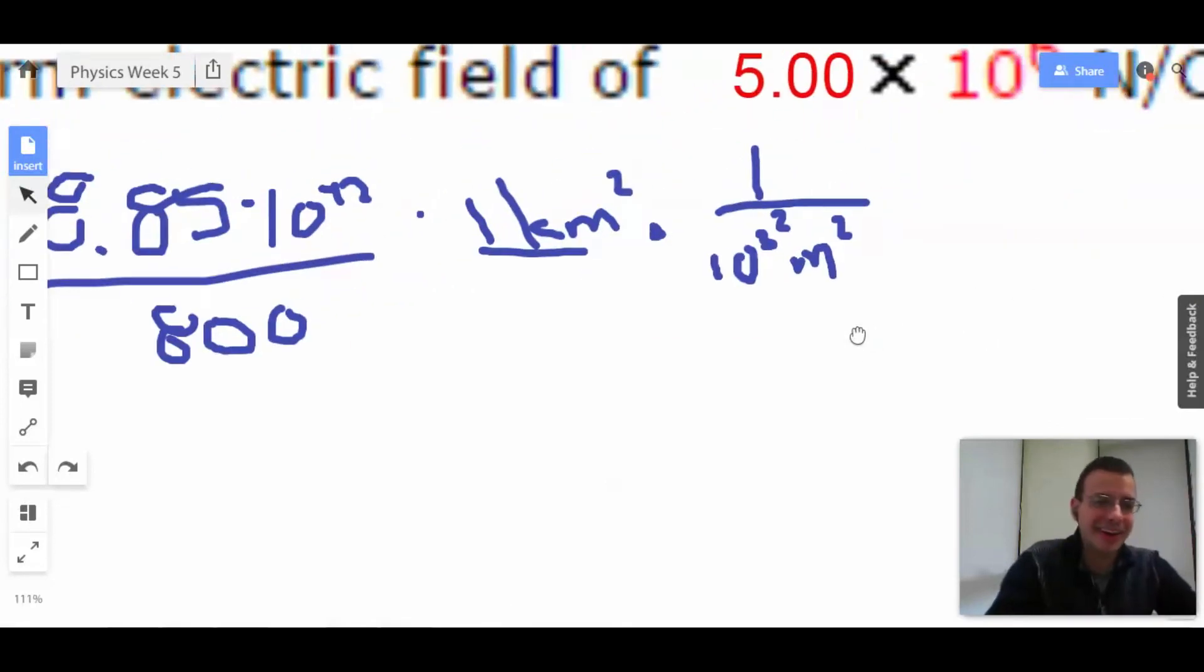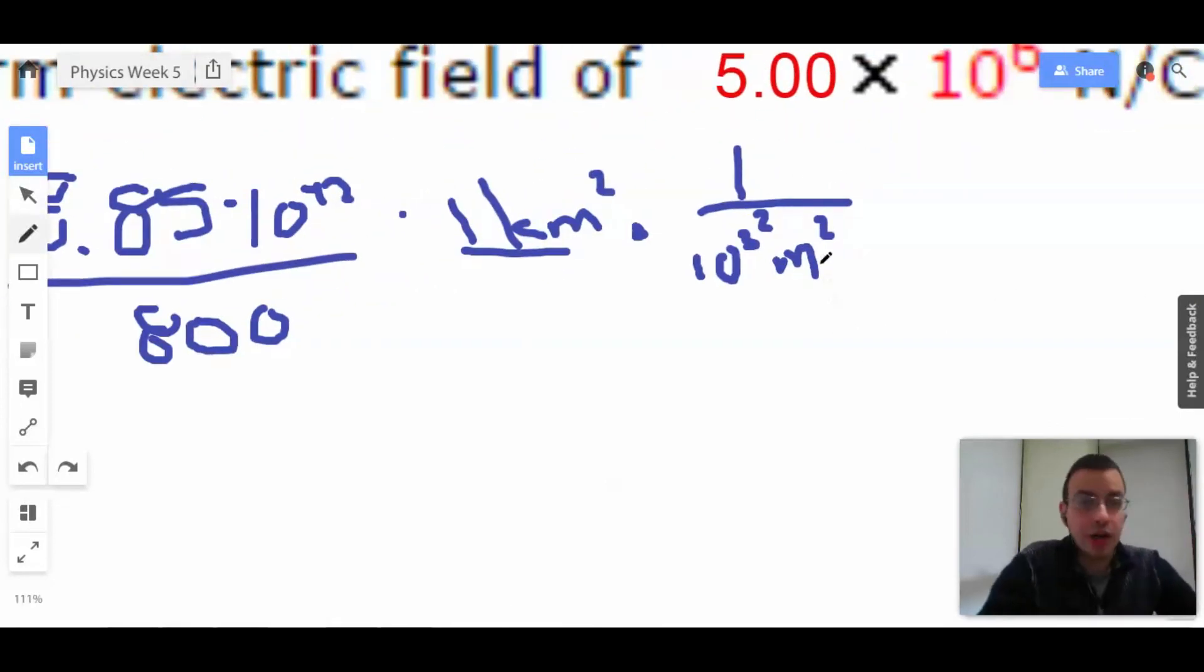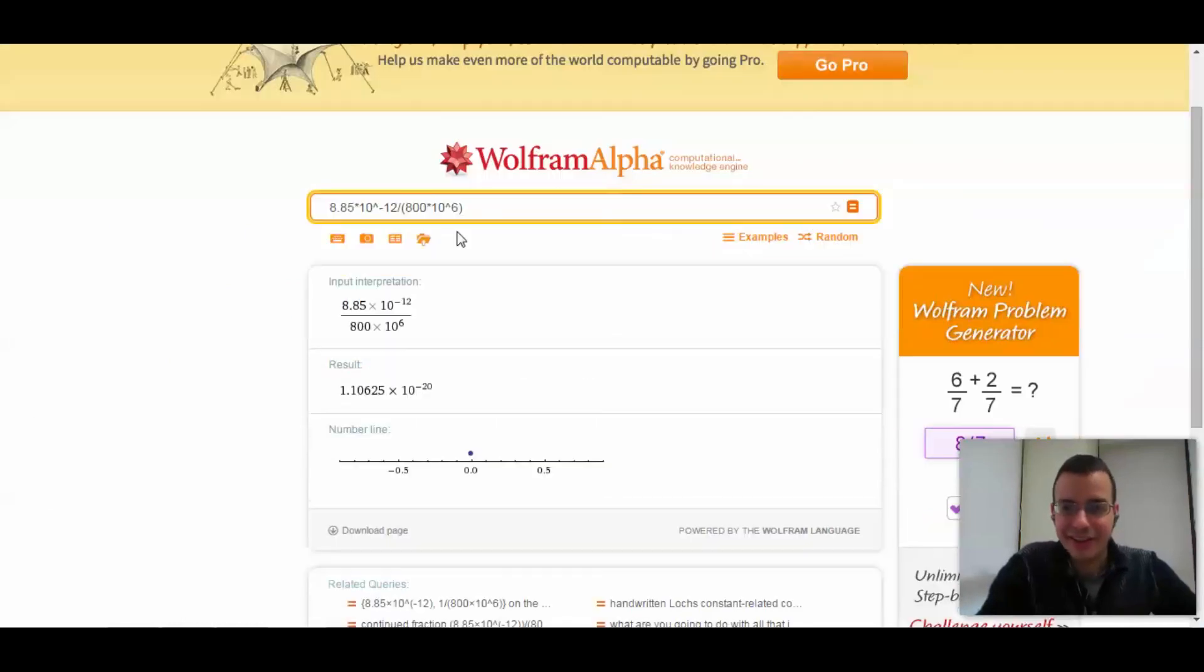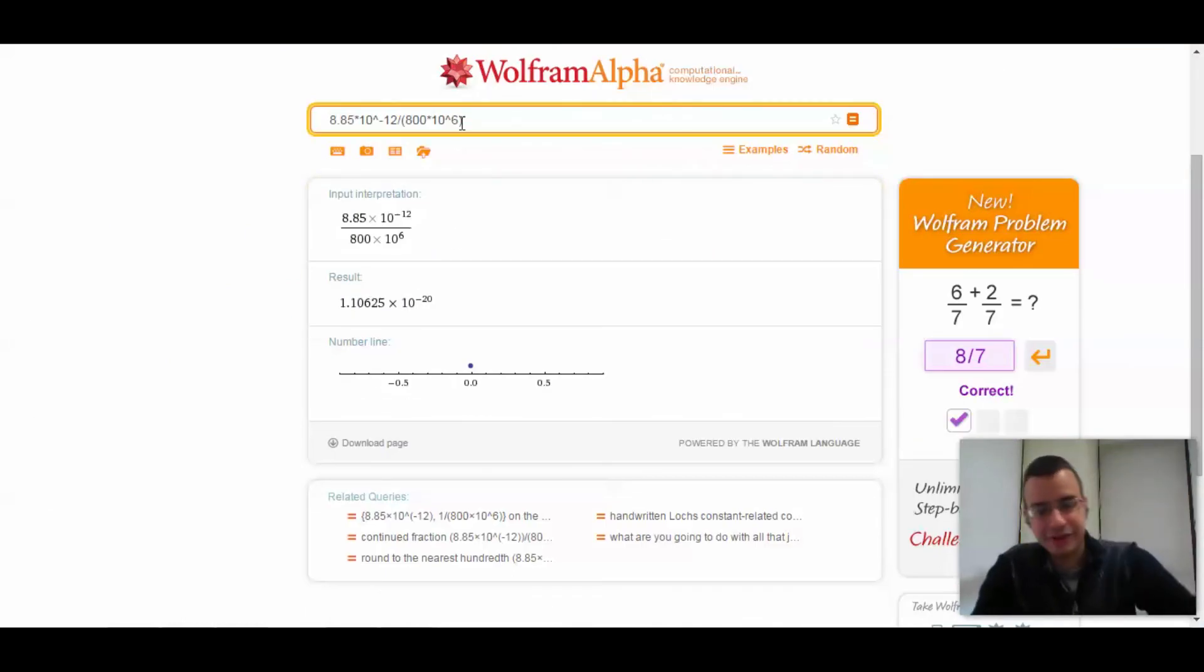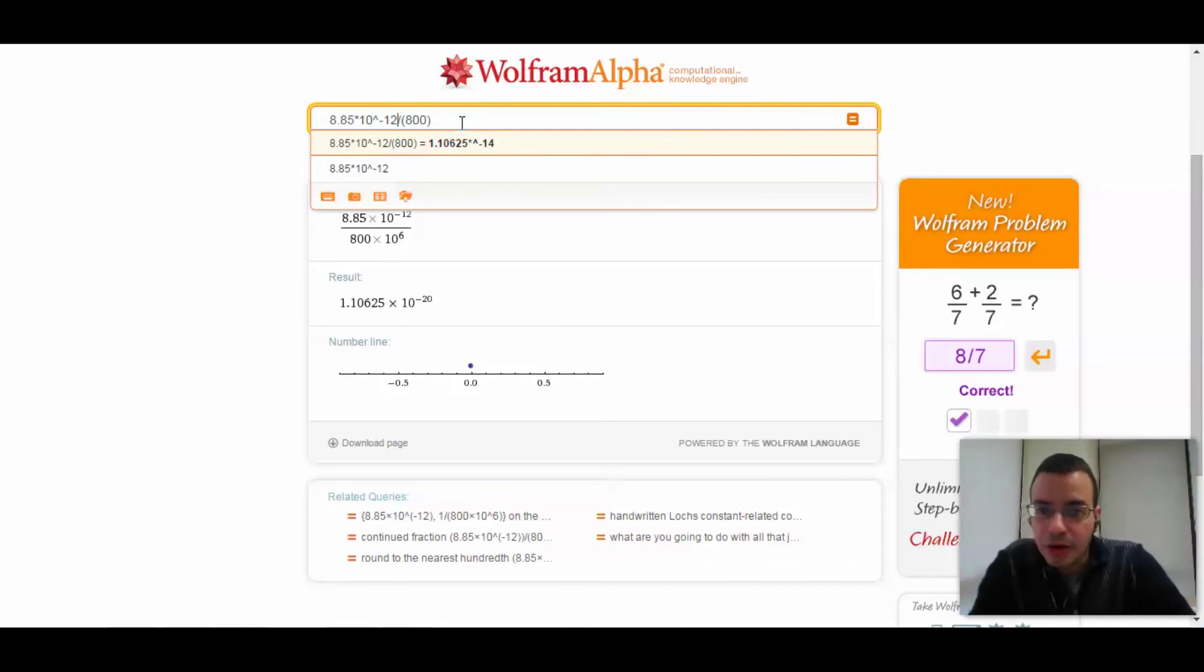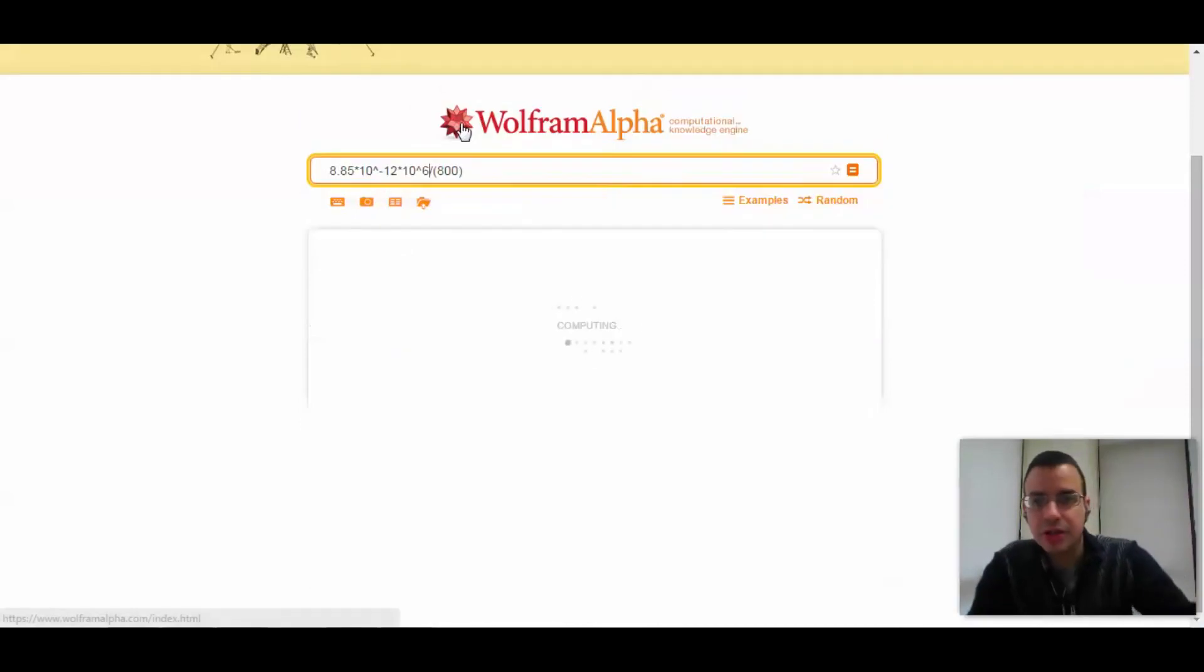Oh, ha ha ha. Alright, so this 10 to the sixth is supposed to be on the top, and then we're supposed to have the kilometer squared on the bottom. That way the kilometer squared cancels out. Got it. Let's get rid of this guy, move him over here, times 10 to the sixth. There we go.